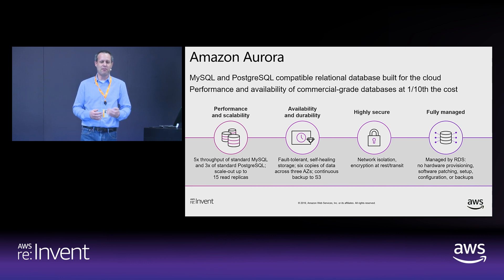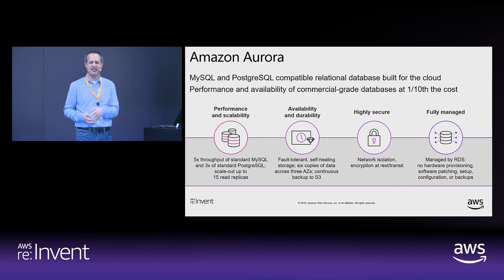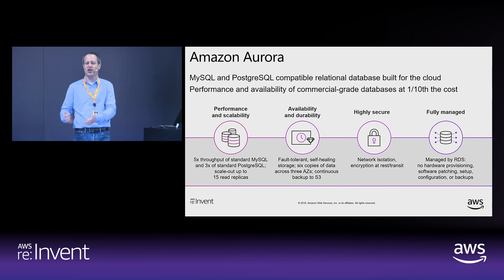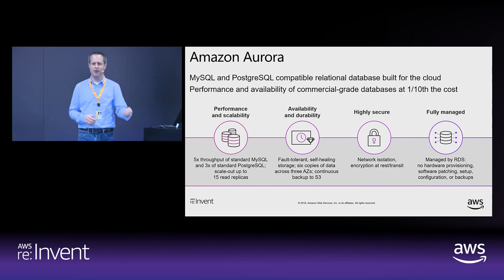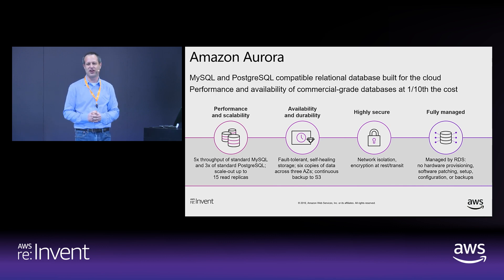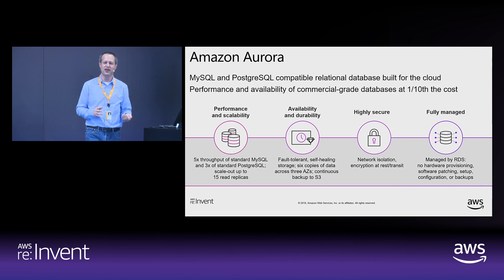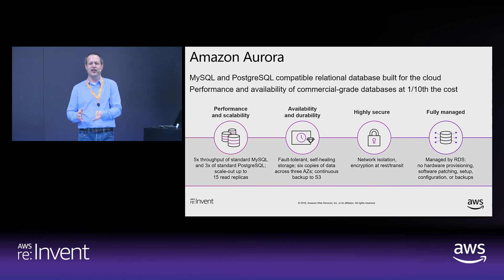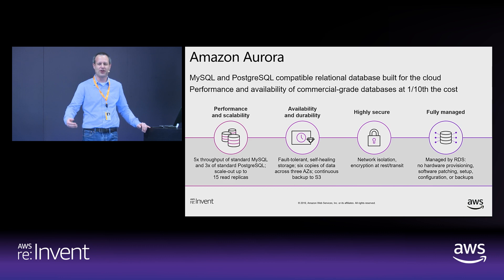The most important thing is how Aurora is similar to a regular MySQL database — it's based on MySQL, the same code base for the most part, but with differences. It's a drop-in replacement. Performance and scalability: it performs typically up to five times faster than a regular MySQL database and up to three times faster than a regular Postgres database. It depends on your application profile, but many customers have seen throughput gains of up to five times.